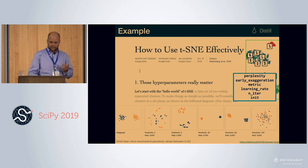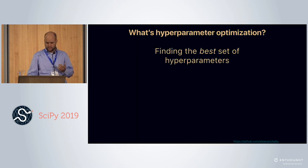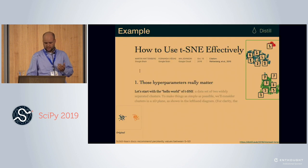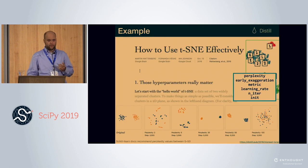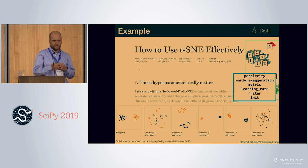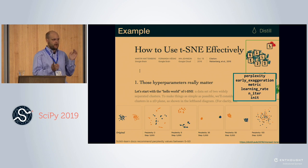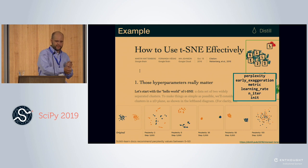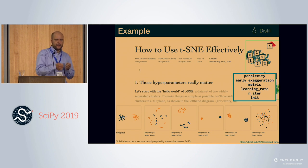There are three more hyperparameters: the learning rate, number of iterations, and initialization — these control the optimization method and really shouldn't be specified by the user, because the optimization process can handle those automatically.